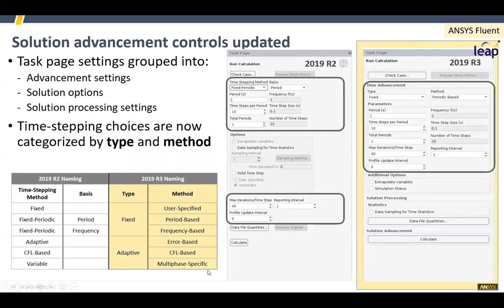In the previous release there were improvements to time-stepping selection, and that's been simplified again so you can choose either fixed or adaptive and then get a selection of methods. The GUI has been replaced by one where it's now much easier to set up what you want. By populating the methods, it will automatically determine the time step and the number of steps.